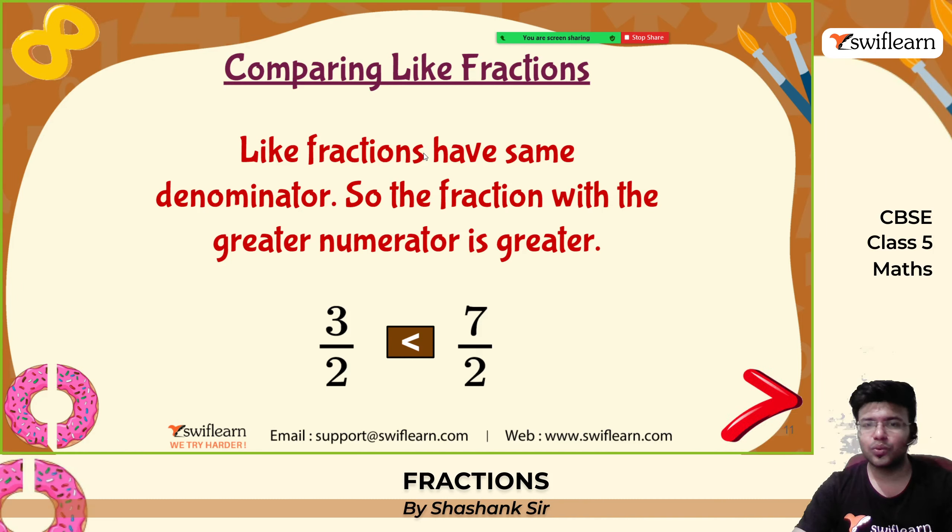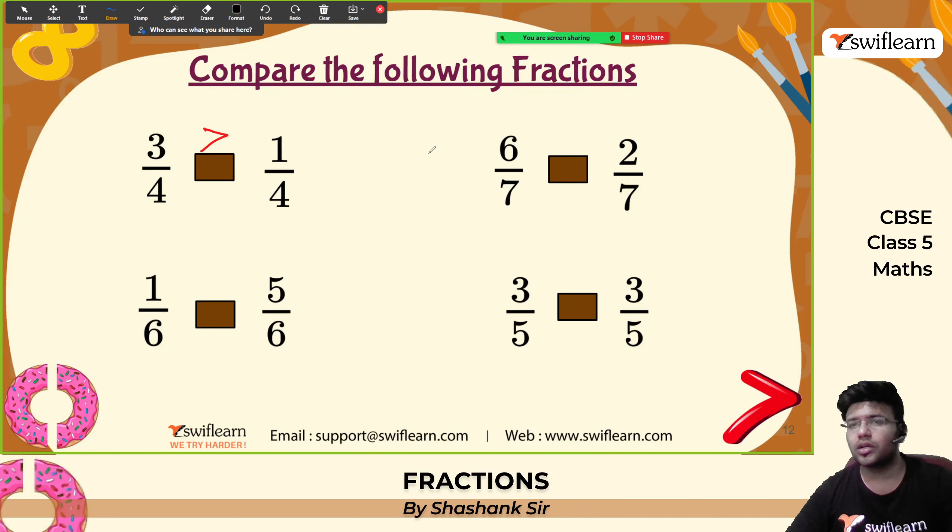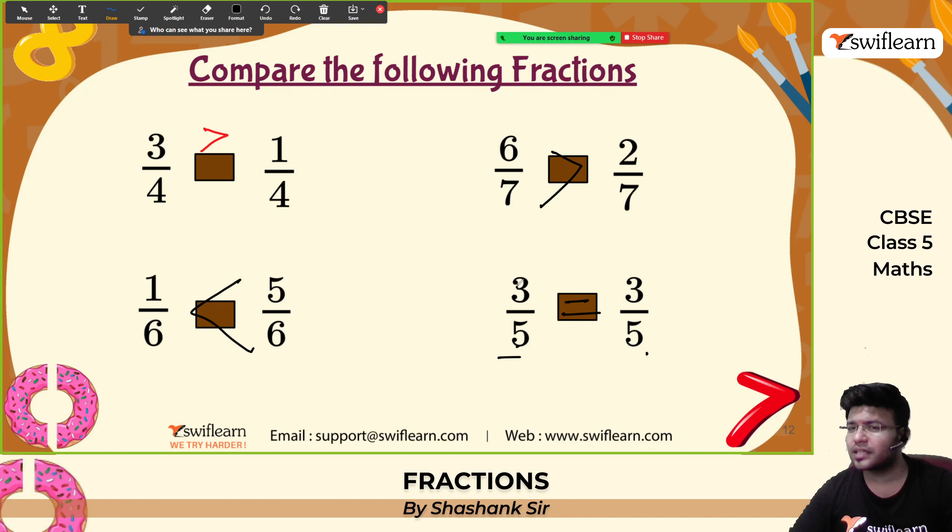Let us solve these comparison problems. First: 3 by 4 and 1 by 4 — denominators are the same, 3 is greater, so 3 by 4 is greater. Second: 6 by 7 and 2 by 7 — denominators are same, 6 is greater. Third: 3 by 5 and 3 by 5 — denominators are same, numerators are same, so they are equal.